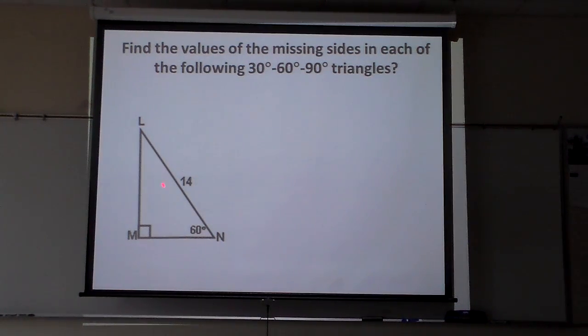Now to use this to solve something, notice which side did they give us? They gave us the hypotenuse. The thing you always want to do is find the 30 degree one first, because it's the easiest one to find, and it's the smallest, it requires less math.